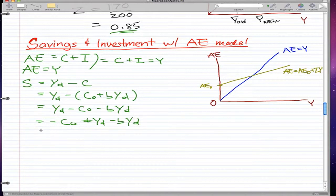And if we take out the YD, we can have minus C naught plus 1 minus BYD times YD. That is simple math.